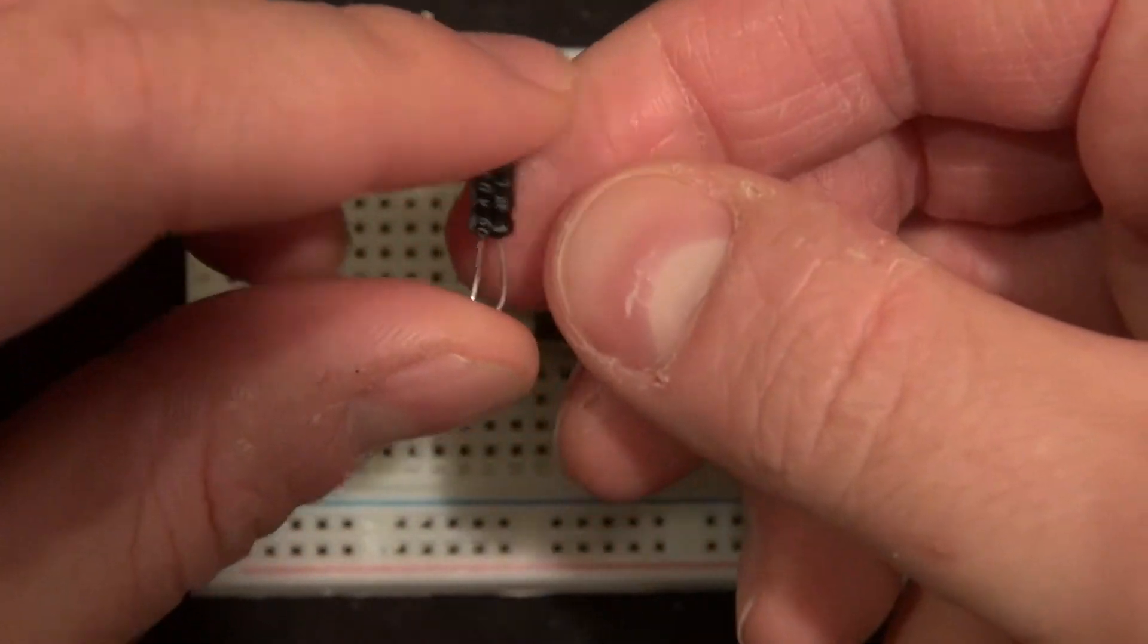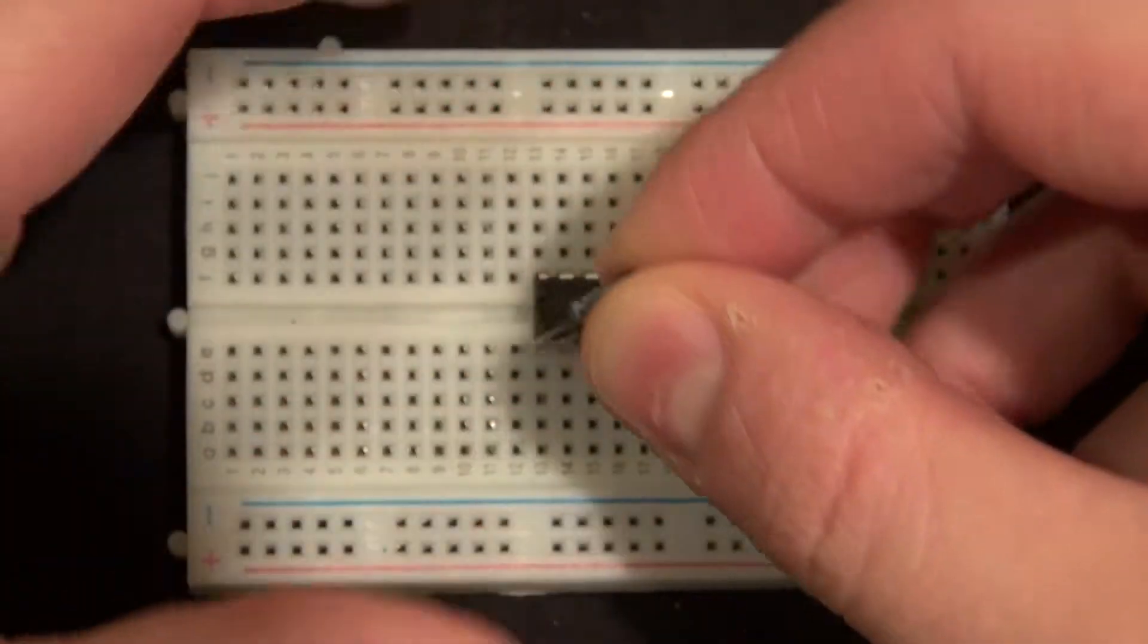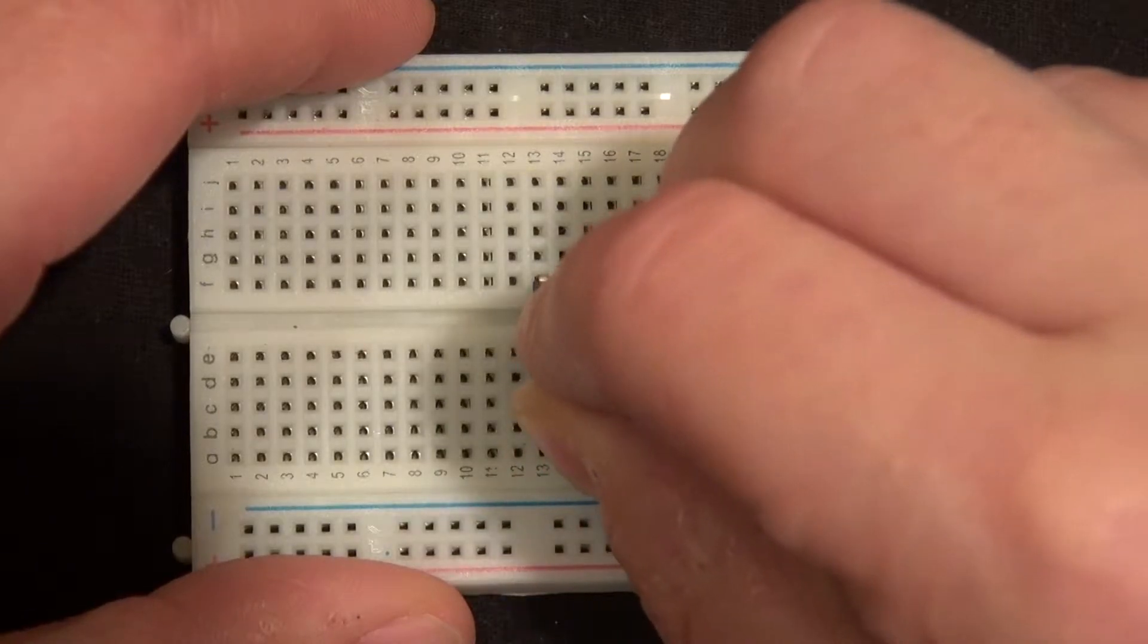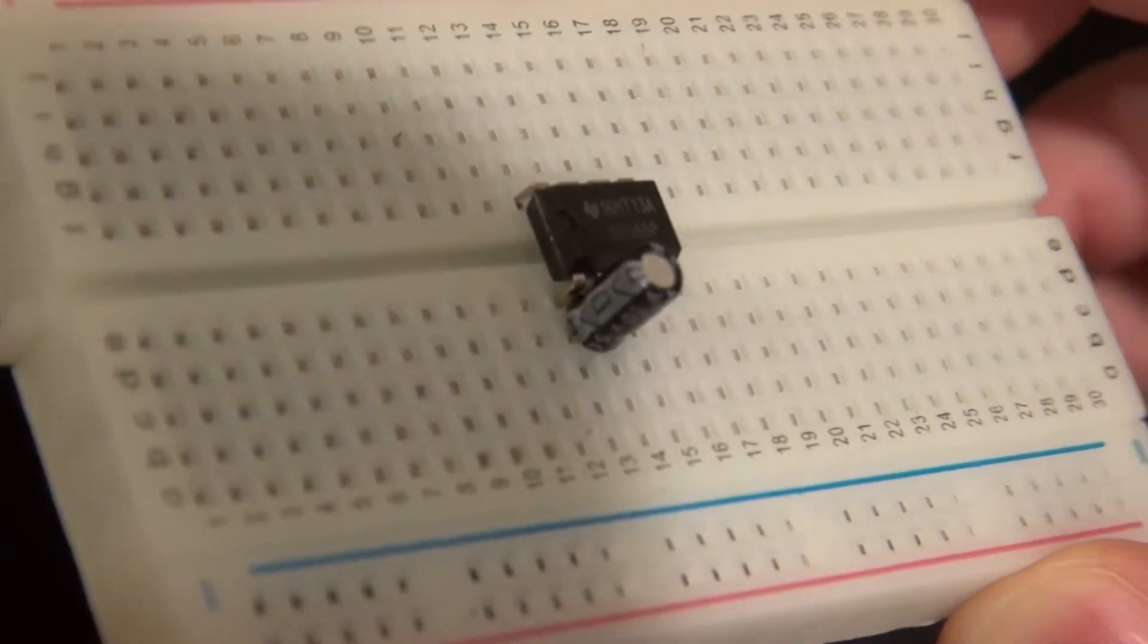Put the negative part of your capacitor and your positive part of your capacitor onto pin 1 and pin 2. Pin 1 is negative and pin 2 will have the positive of the capacitor, just like that.